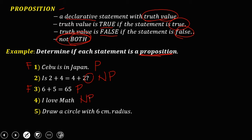'Draw a circle with a 6-centimeter radius.' Since this is not a declarative statement — it is an imperative — it is not a proposition. Then: 'If x equals 3, then x plus y equals 0.' Since there is no value for y, this statement can be true or false, but a proposition cannot be both — so this is not a proposition.